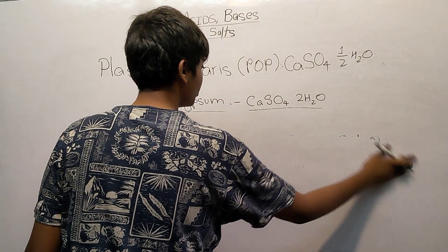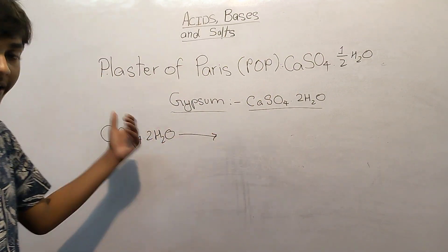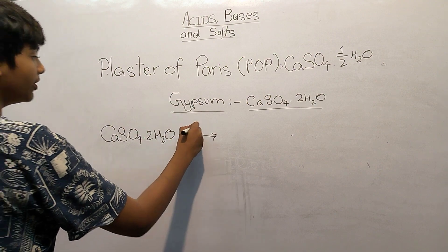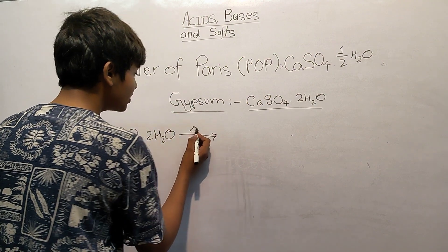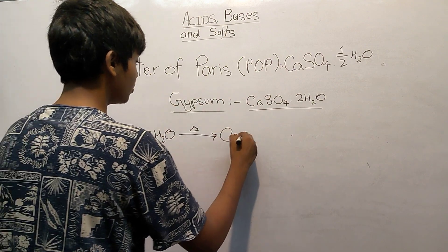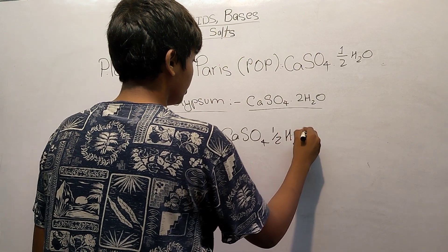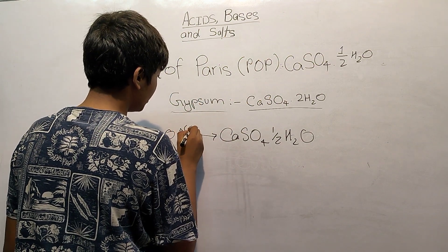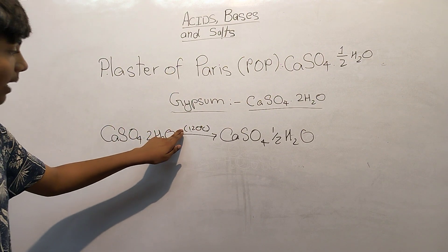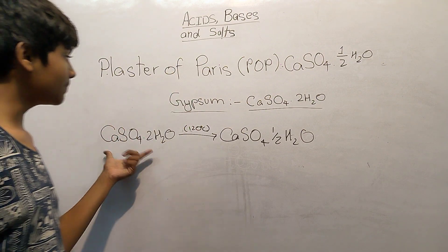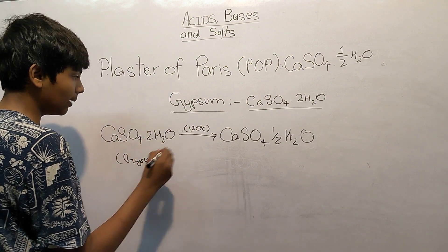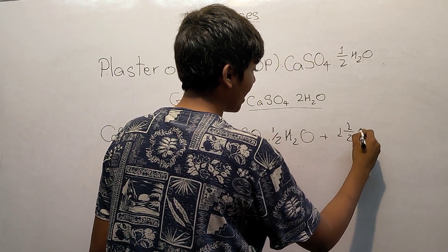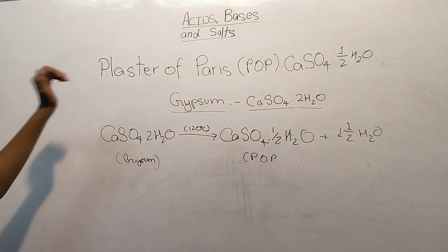When you heat CaSO4·2H2O at around 373 Kelvin, the salt loses its water of crystallization. It releases one and a half molecules of water, forming CaSO4·½H2O. So this is our Plaster of Paris.